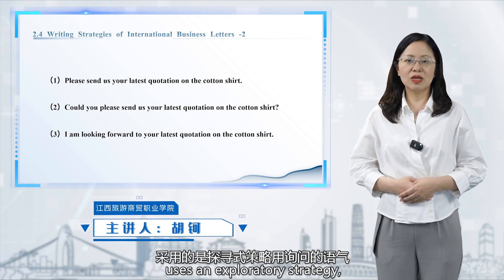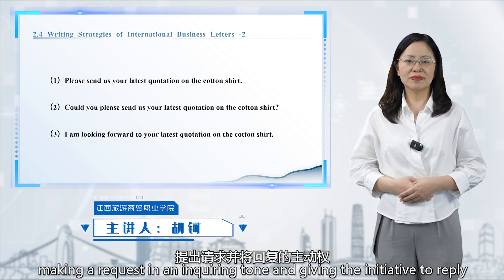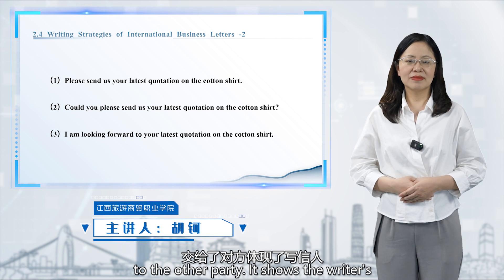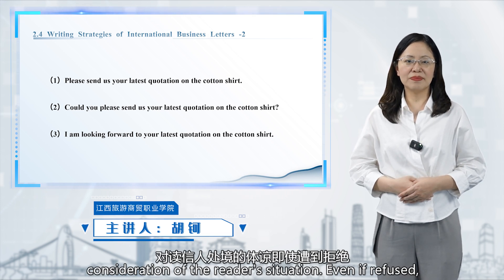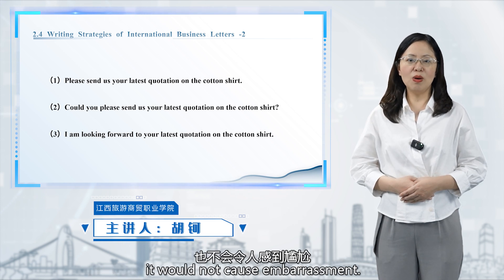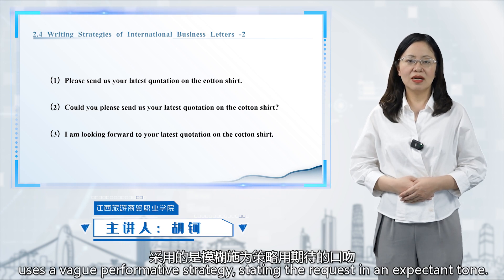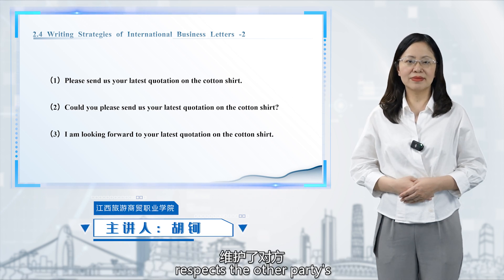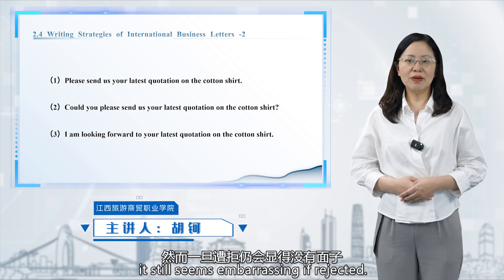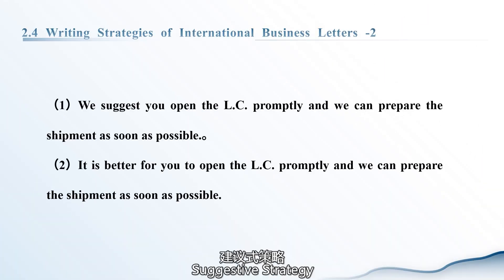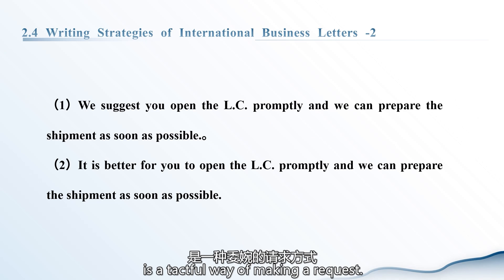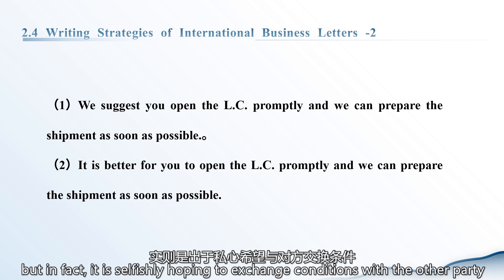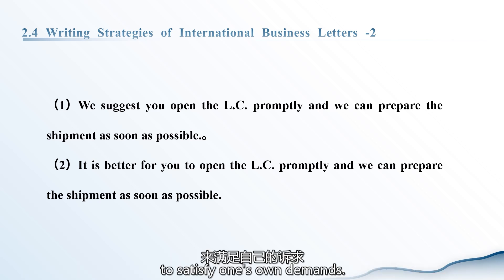The second sentence uses an exploratory strategy, making a request in an inquiring tone and giving the initiative to reply to the other party. It shows the writer's consideration of the reader's situation. Even if refused, it would not cause embarrassment. The third sentence uses a vague performative strategy, stating the request in an expectant tone. Although the writer respects the other party's right to choose freely, it still seems embarrassing if rejected. Suggestive strategy is a tactful way of making a request; it seems to give advice to the other party, but in fact it is selfishly hoping to exchange conditions with the other party to satisfy one's own demands.